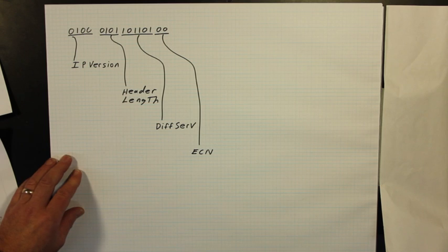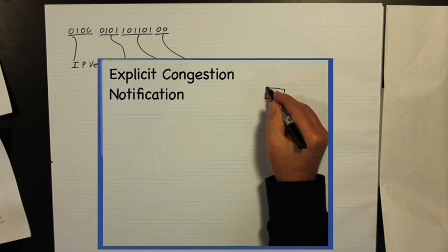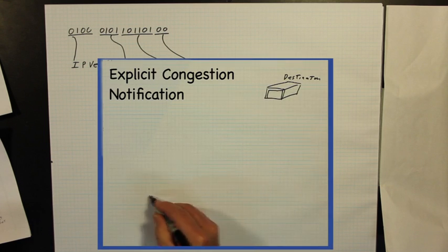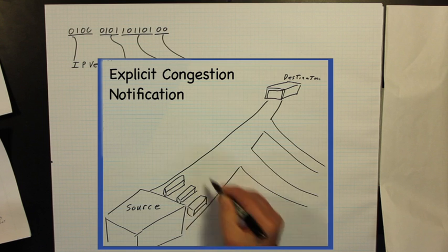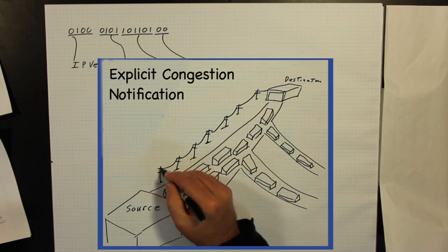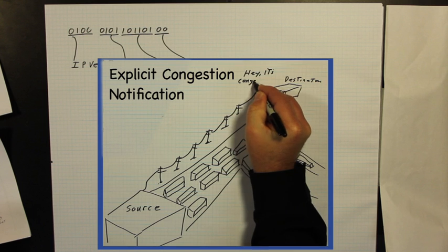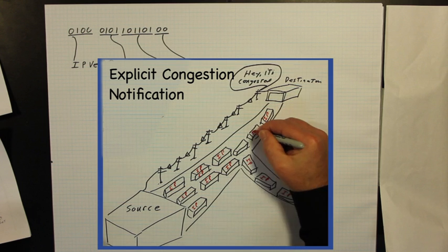ECN, or Explicit Congestion Notification, is a method used by some networks to inform the transmitting devices about the existence of congestion on the network. These two bits act as flags to indicate the presence of congestion.